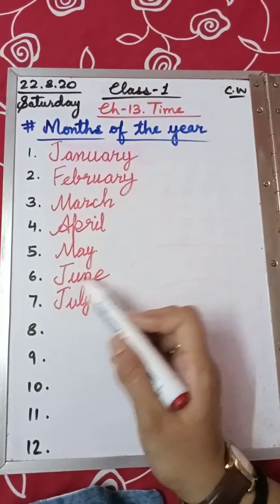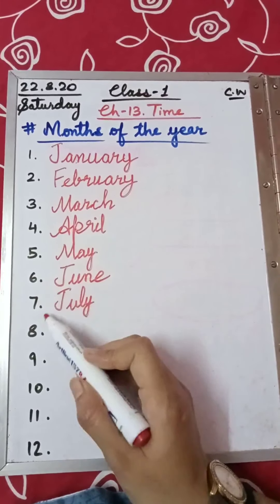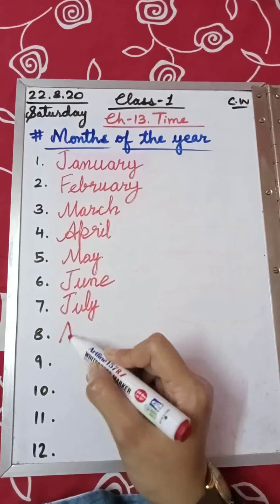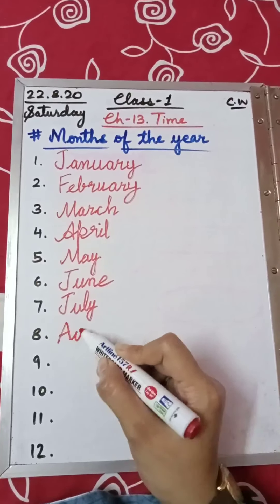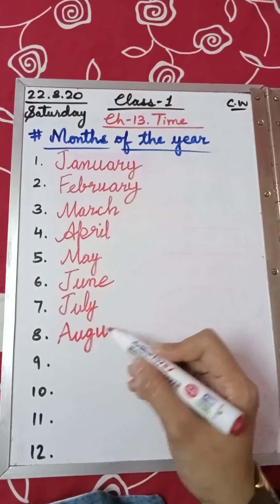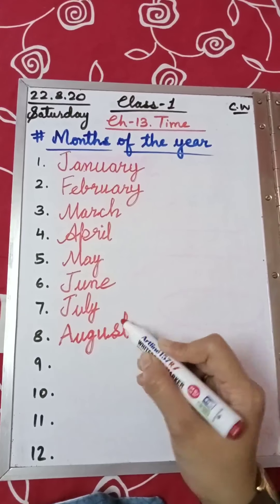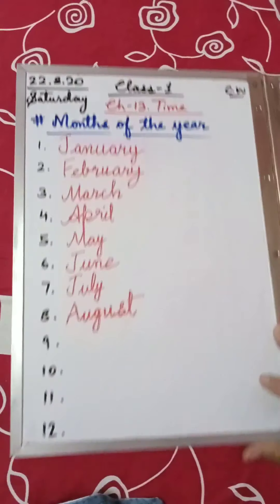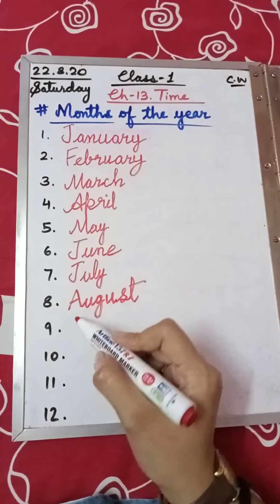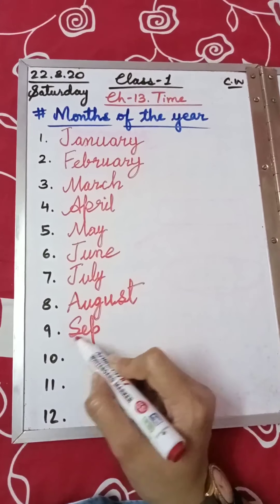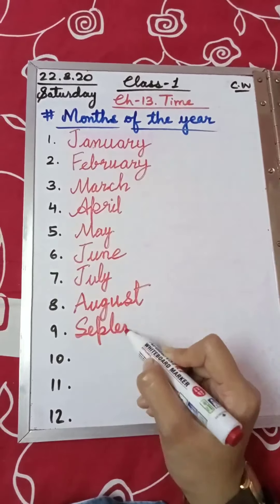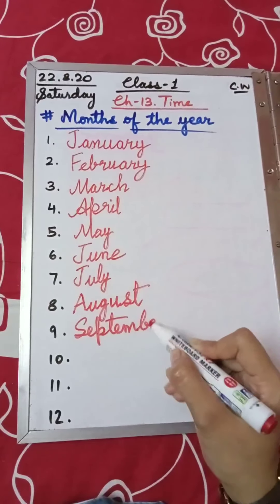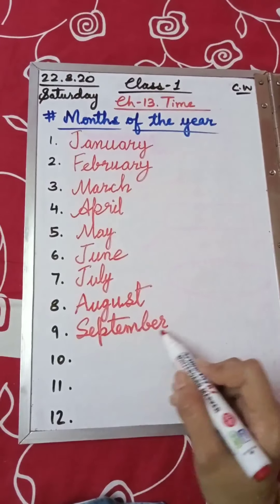June is the 6th month and July is the 7th month. After July comes August — A-U-G-U-S-T, August. Then September — S-E-P-T-E-M-B-E-R, September.